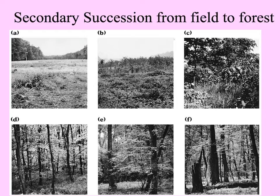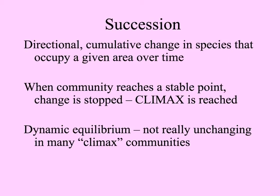Contrast that with secondary succession, where forests were cleared for agriculture, for example. An old field is left to be covered with weeds, then larger weeds and smaller perennial plants and shrubs, eventually giving way to fast-growing trees and later slow-growing trees. In this directional cumulative change, when the community reaches a stable point, change slows down or stops. The climax is reached, but really the climax is a dynamic equilibrium in most communities.